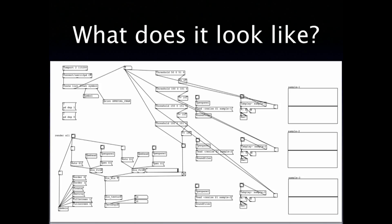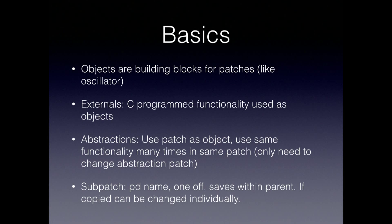So it looks like this. You are basically connecting nodes to make the functionality you want. The basic building blocks in Pure Data are objects - an object can be anything like an oscillator or an amp. You can also use externals: when there isn't functionality you need, you can program it yourself. It's really simple.